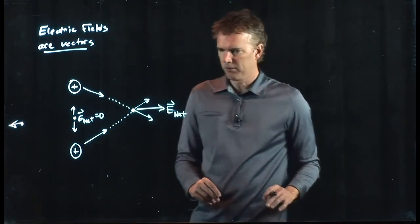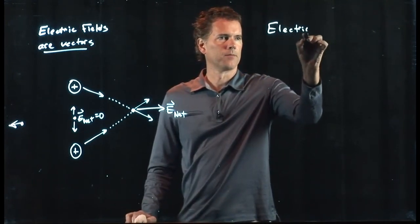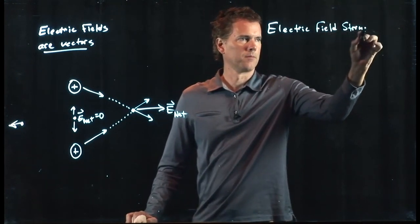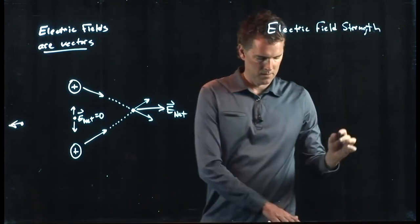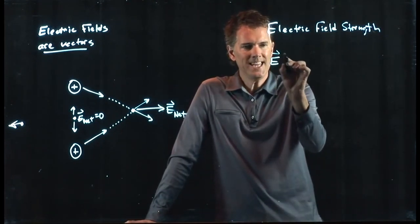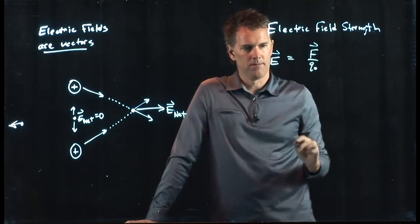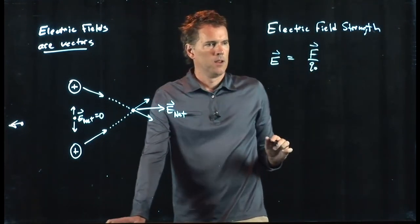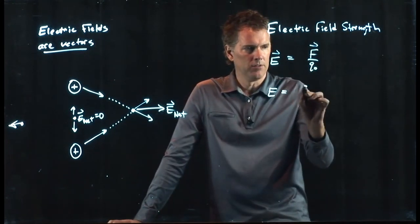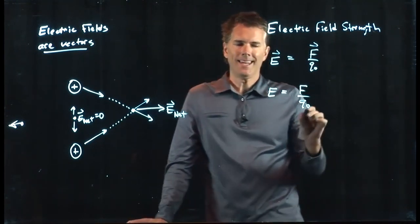Okay, so what is the strength of these electric fields? Well, the strength is the following. What we said was E is F over Q naught. The magnitude is just going to be the magnitude of F divided by Q naught.